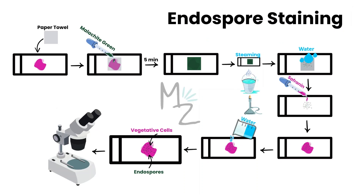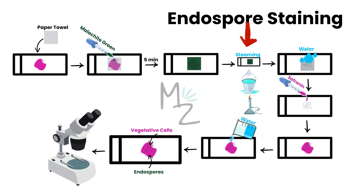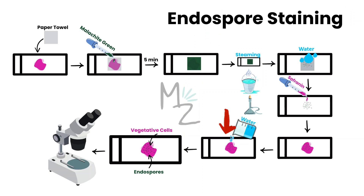Let's review everything quickly. Step one: smear the sample on the slide and put a paper towel to absorb excess liquid, aid drying, handle the specimen properly, and prevent contamination. Step two: saturate the paper towel with malachite green and leave it for five minutes. Step three: steam the slide — steam acts as a mordant to fix the dye. Step four: rinse with distilled water, which acts as a decolorizer, making vegetative cells colorless while endospores remain green. Step five: add safranine as a counter stain — it stains vegetative cells pink while endospores remain green. Step six: add water again and proceed to microscopy — vegetative cells appear pink or red, and endospores appear as green dots.